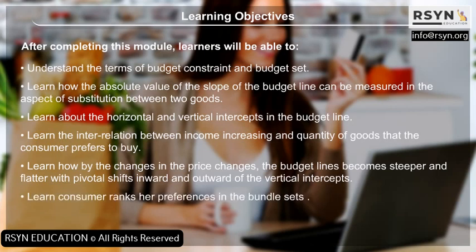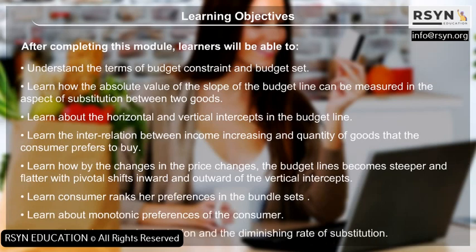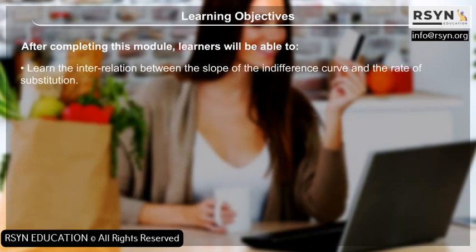Learners will understand how a consumer ranks her preferences in the bundle sets and learn about monotonic preferences of the consumer. They will also learn about the rate of substitution, the diminishing rate of substitution, and the interrelation between the slope of the indifference curve and the rate of substitution.